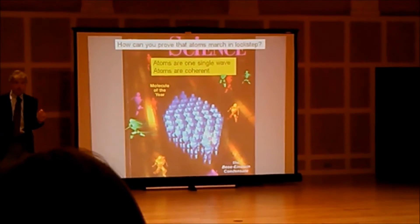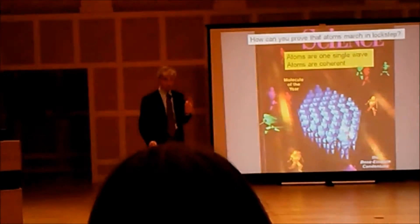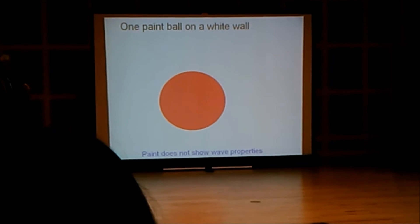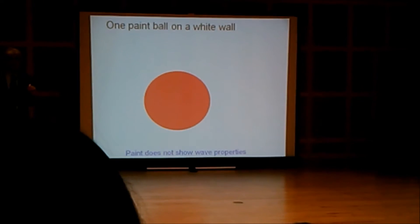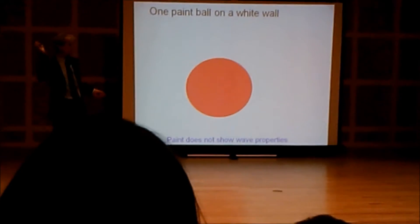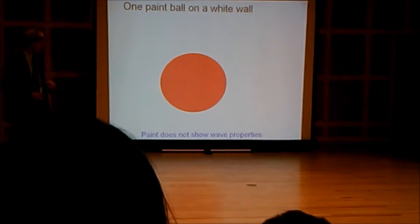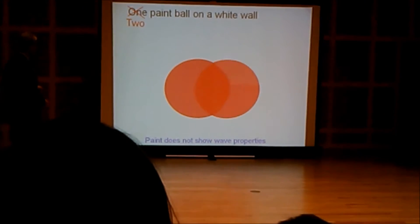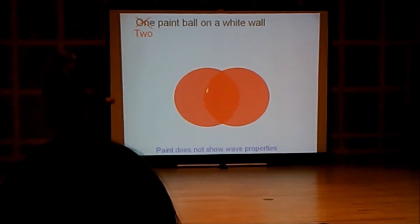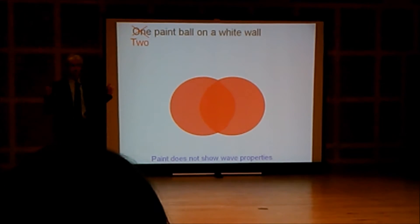Let me now explain how in physics we can show that something behaves as a wave. And let me first contrast it with something which does not show wave properties, namely red paint. If I take a balloon filled with red paint, a paintball, and throw it on a wall, I create a red spot. A second paintball creates another red spot. And if I aim well, you will find there is a region where red paint and red paint gives darker red paint.